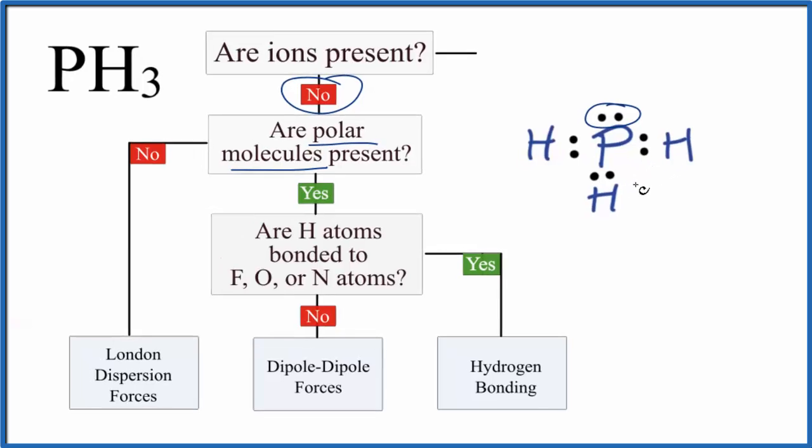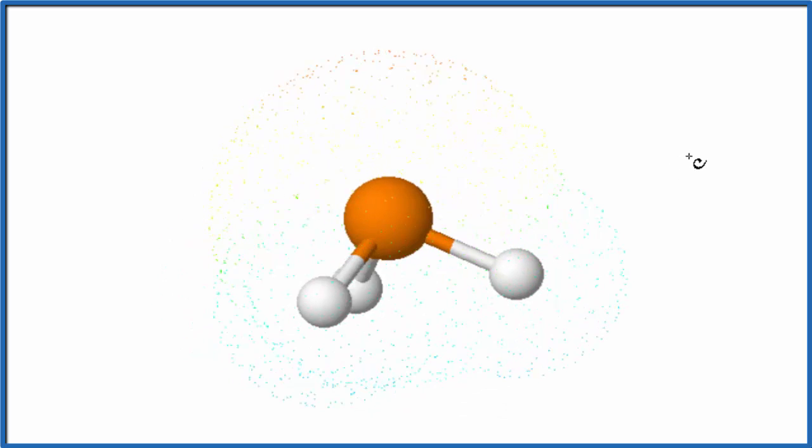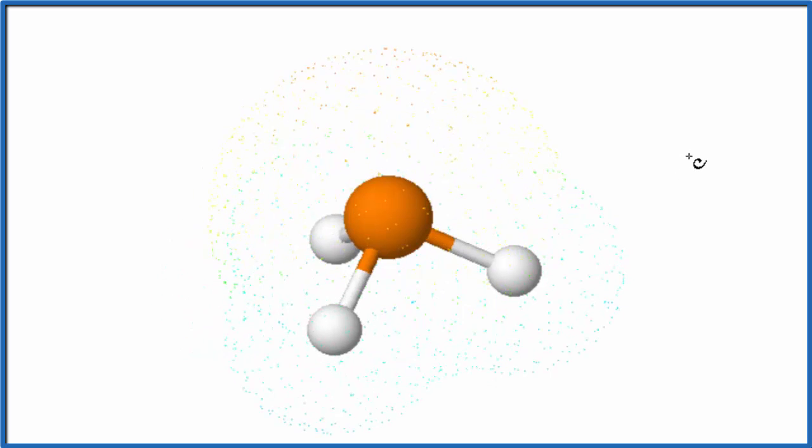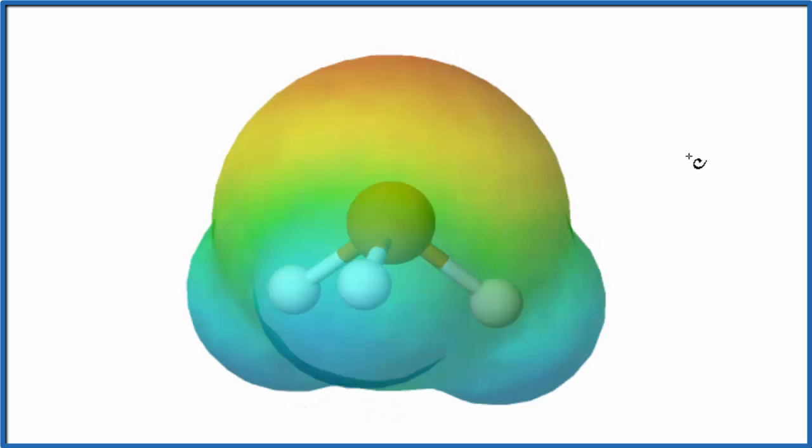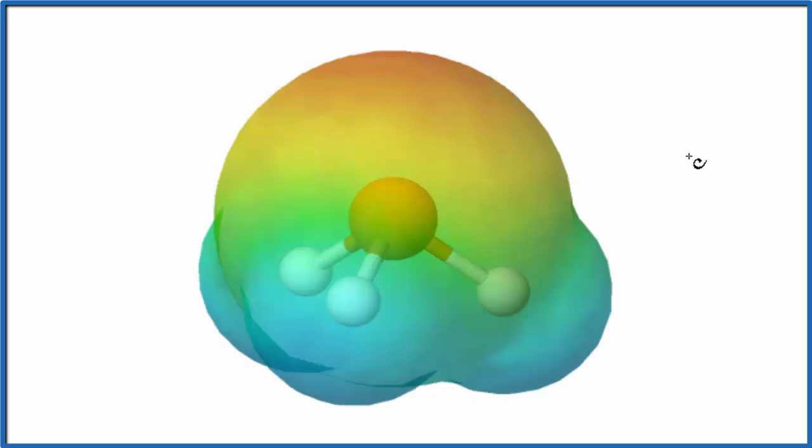Let's look at that in three dimensions. This is the electrostatic surface of the molecule. There's a little bit of negative charge up here and on the bottom a little bit of positive. Not really strong like water or ammonia, but it's still a polar molecule.